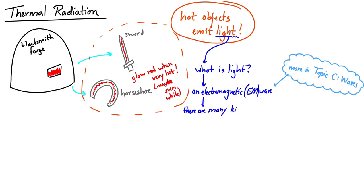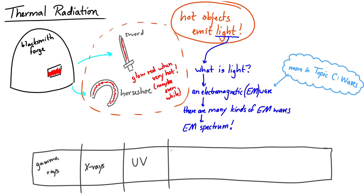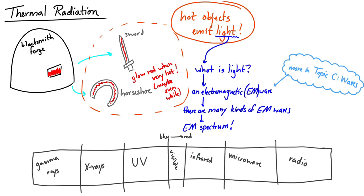We organize electromagnetic waves in the electromagnetic spectrum, which is given in your data booklet. Just remember: gamma rays, x-rays, ultraviolet, visible going from blue to red, infrared, microwaves, radio waves. That is in order from high frequencies to low frequencies, or from very small wavelengths to very large wavelengths.